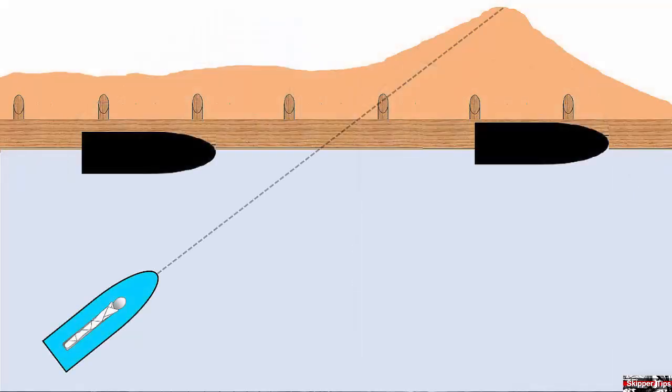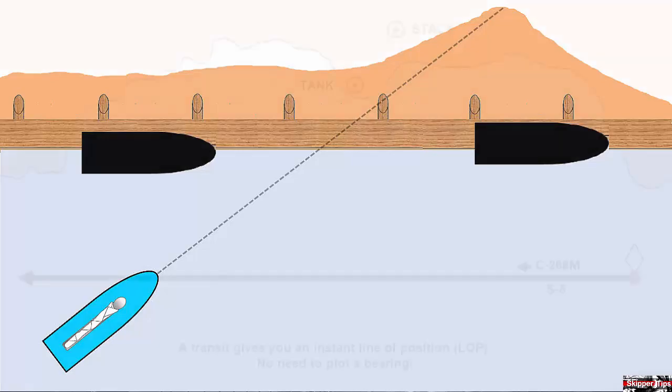Use transits when docking for greater precision. Here we need to land our vessel between the two moored boats, and we don't want her to drift ahead or astern. We have a natural transit formed by the hill and dock piling, and we'll keep these two objects in line throughout the approach for a smoother landing.